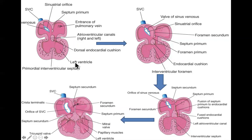The interventricular septum is pretty simple. The wall that divides the two ventricles basically starts growing gradually from the floor of the heart - it grows up and eventually connects at the endocardial cushion. It grows up from the floor until it connects to the top, and now there's a septum between the two ventricles. That's about all there is to it.